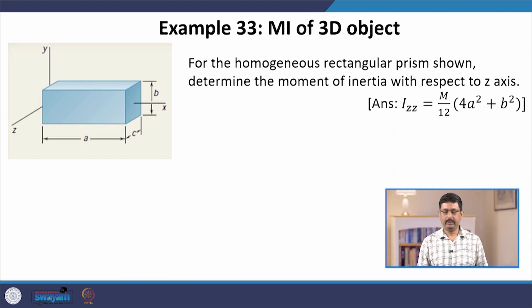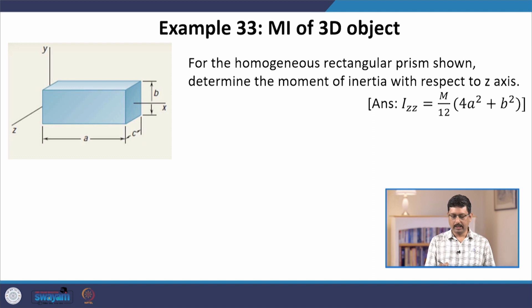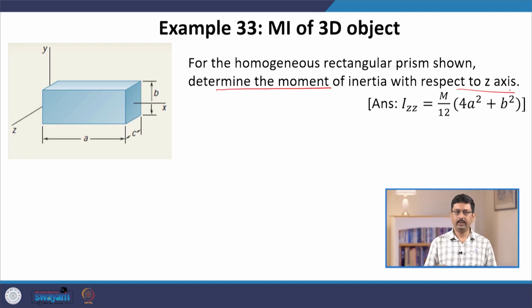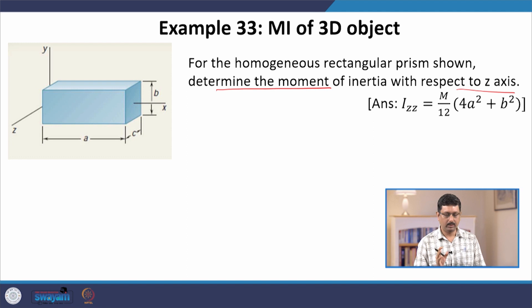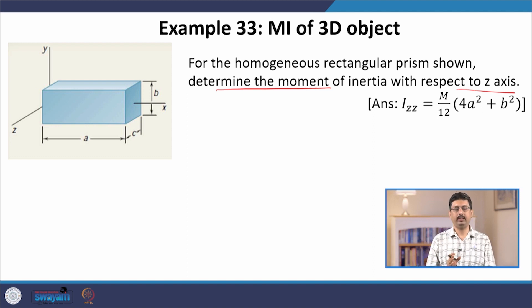Here is the example. We have a rectangular prism as shown in this figure, and the question is to determine the moment of inertia with respect to the z axis. Note the reference frame — when you calculate moment of inertia, the first thing is to consider where is the origin, and the second thing is to consider what is the reference frame, that is, how the x coordinate axes are defined.